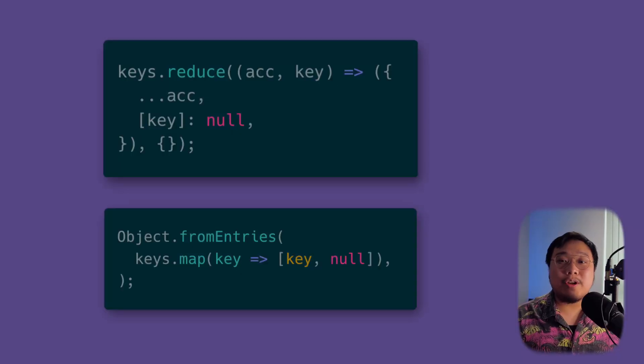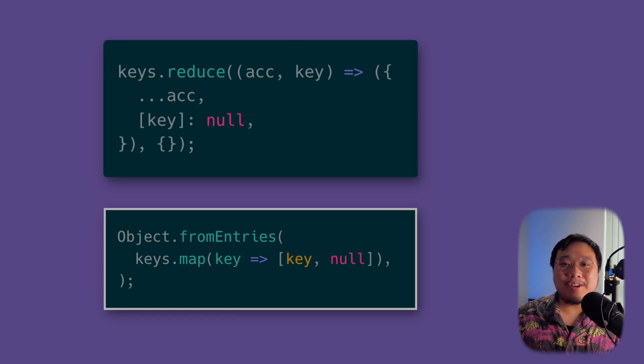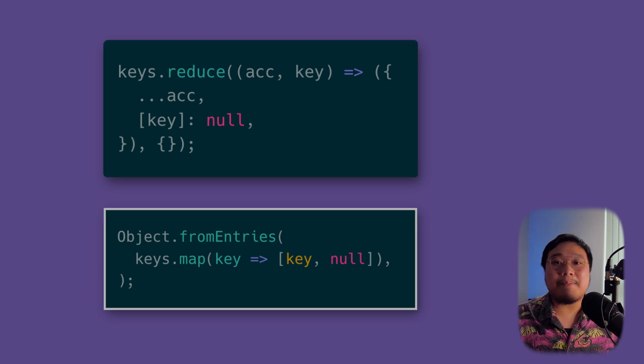Hello everyone, my name is Jason. Welcome back to my channel. Here's a quick question: which version of this code is cleaner? Is it the reduced version, or is it the one with Object.fromEntries? A few years ago, I got into a full day discussion with a colleague over this one line of code. I was reviewing his PR and suggested replacing his reduce with the fromEntries version, because that's what I thought to be cleaner and more readable.